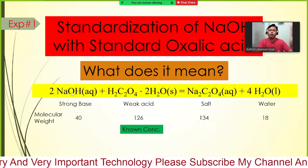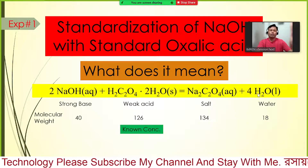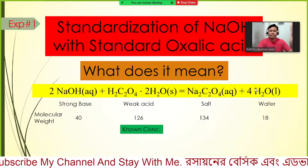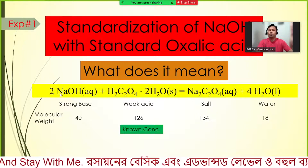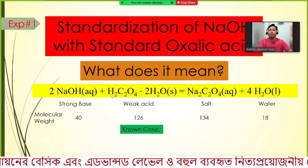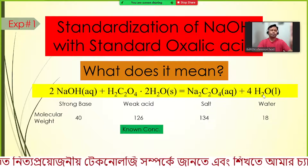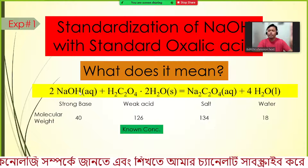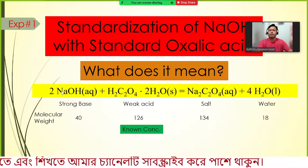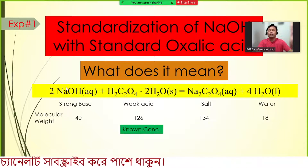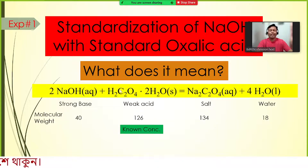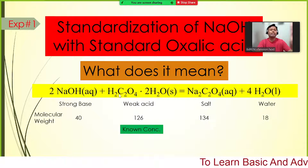The balanced equation tells us that two moles of sodium hydroxide react with one mole of oxalic acid to form one mole of sodium oxalate plus four moles of water. The molecular weight of sodium hydroxide is 40 g/mol (Na=23, O=16, H=1). For oxalic acid in crystal form, two molecules of water are included, giving H₂C₂O₄·2H₂O.